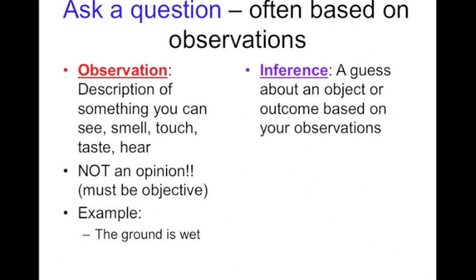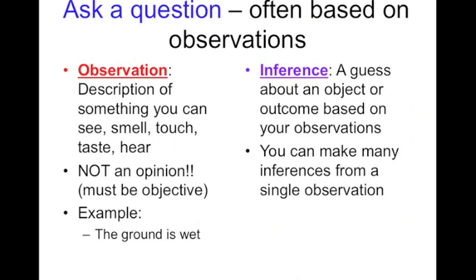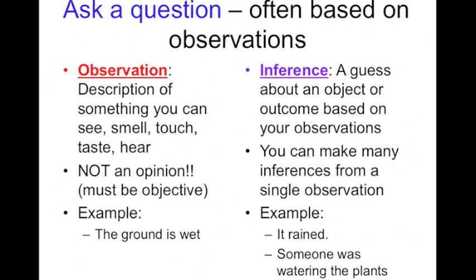An inference is a guess about an object or outcome based on what you observe. You're observing something that's very objective, but then you're going to guess, you're going to put your opinion into what you think is going on. We can make several inferences from a single observation. So for example, remember our observation was the ground is wet. That could be a fact that many people could look at and see. Inferences could be that it rained, that someone was watering the plants, that there's a leak, that someone spilled something.